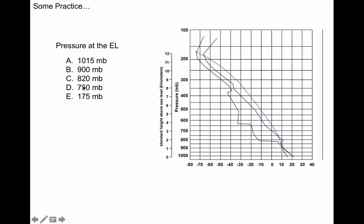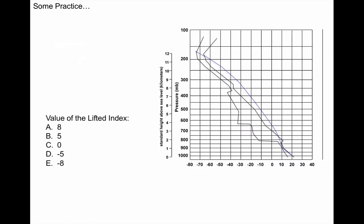At what pressure is the level of free convection? Our clue is to look for the point starting from the ground going up where the parcel line becomes warmer than its environment. The blue line is cooler than the black outside line until that point, which happens at roughly 750 millibars. What is the pressure at the equilibrium level? Go to the top of the sounding and look for where the parcel line crosses back over again — that happens at roughly 175 millibars. The lifted index: at 500 millibars the air temperature is about minus 16 or minus 17. The parcel temperature is about minus 11 or minus 12. The difference is approximately negative 5 degrees. The atmosphere is unstable.